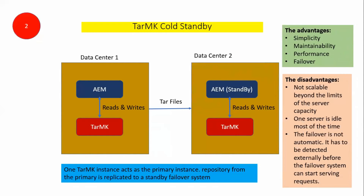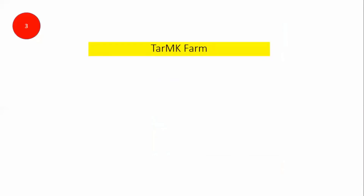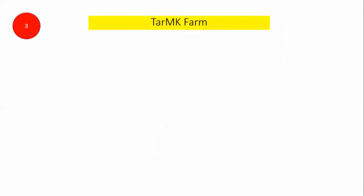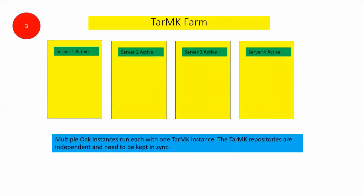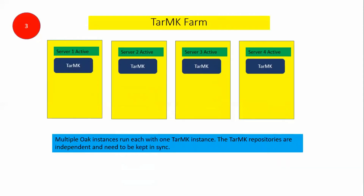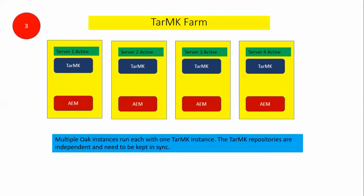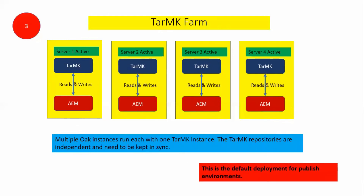The third option is TarMK farm with AEM instances. Multiple AEM instances run, each with one TarMK instance. The TarMK repositories are independent and need to be kept in sync. As seen in the diagram, we have multiple servers which are active; every server has its own TarMK instance and an AEM, and read/write happens directly. Remember, this is the default deployment for publish environments.